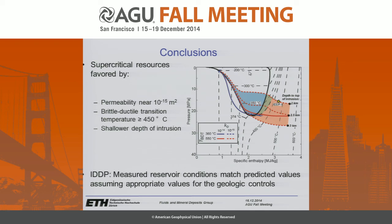In addition, this diagram shows that if you assume values for the geologic controls appropriate for the Krafla volcano, we can reproduce the thermohydraulic conditions measured in the IDDP-1 well. This is an encouraging result both in terms of giving us confidence that our models are meaningful, and also that our conclusion — that geologic controls play a large role in governing the characteristics of supercritical resources — is correct.